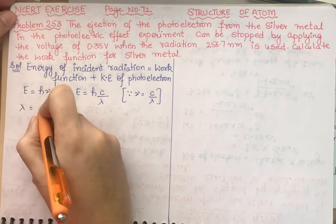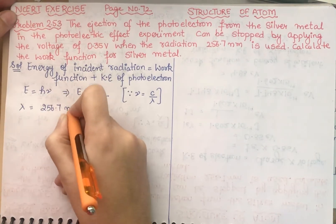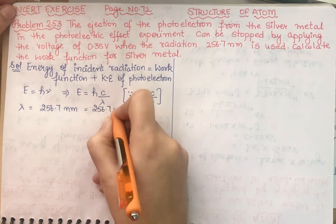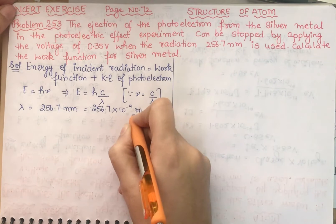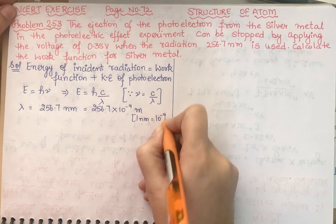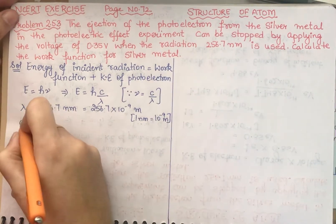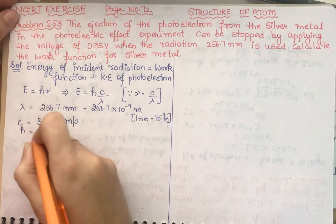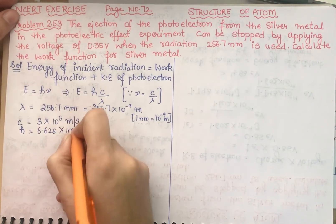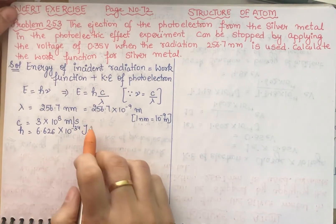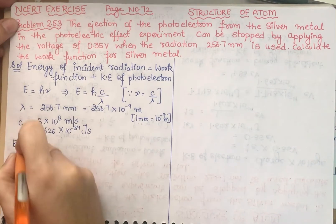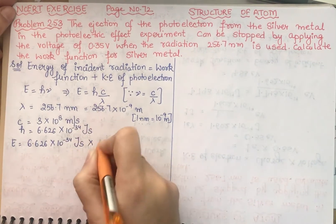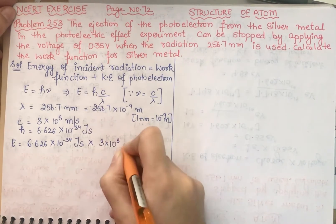Lambda is 256.7 nanometer. We need to convert to SI units: 256.7 × 10⁻⁹ meter, since 1 nanometer = 10⁻⁹ meter. The speed of light C = 3 × 10⁸ m/s, and Planck's constant H = 6.626 × 10⁻³⁴ joule·second. Now we put all values into the formula: E = (6.626 × 10⁻³⁴ × 3 × 10⁸) / (256.7 × 10⁻⁹).